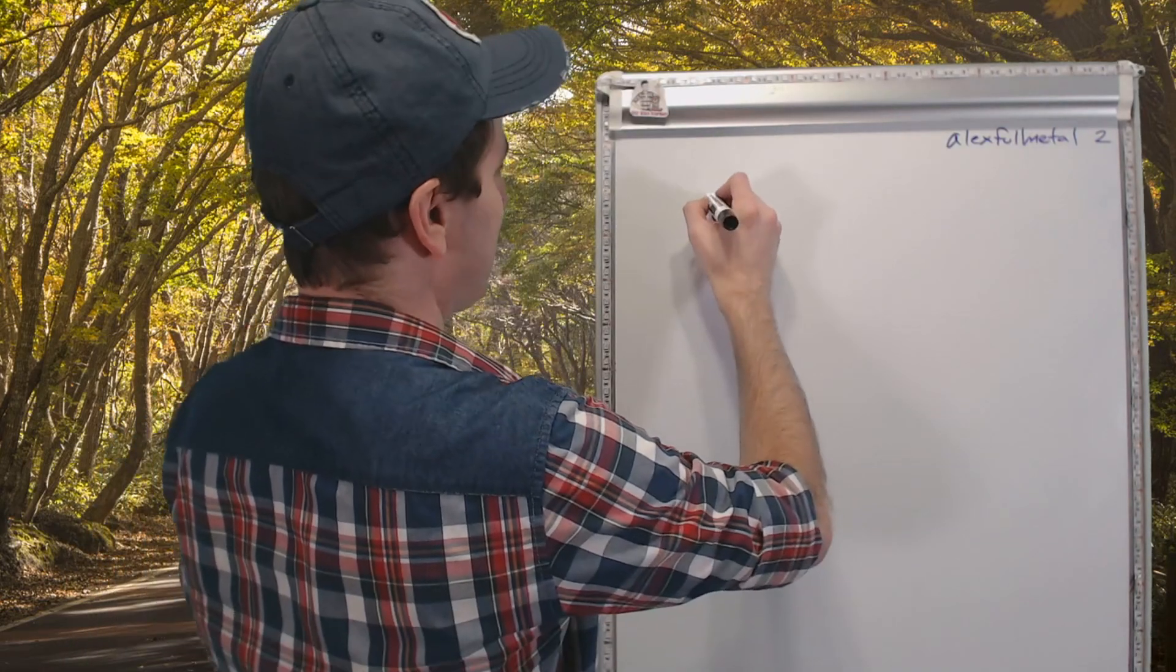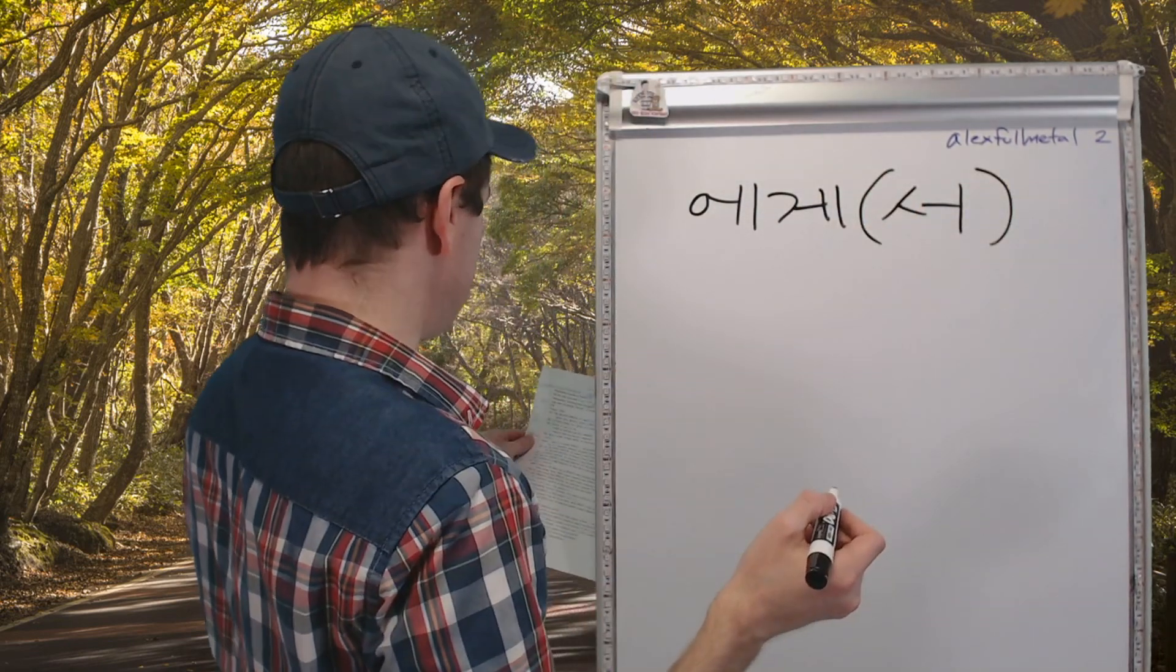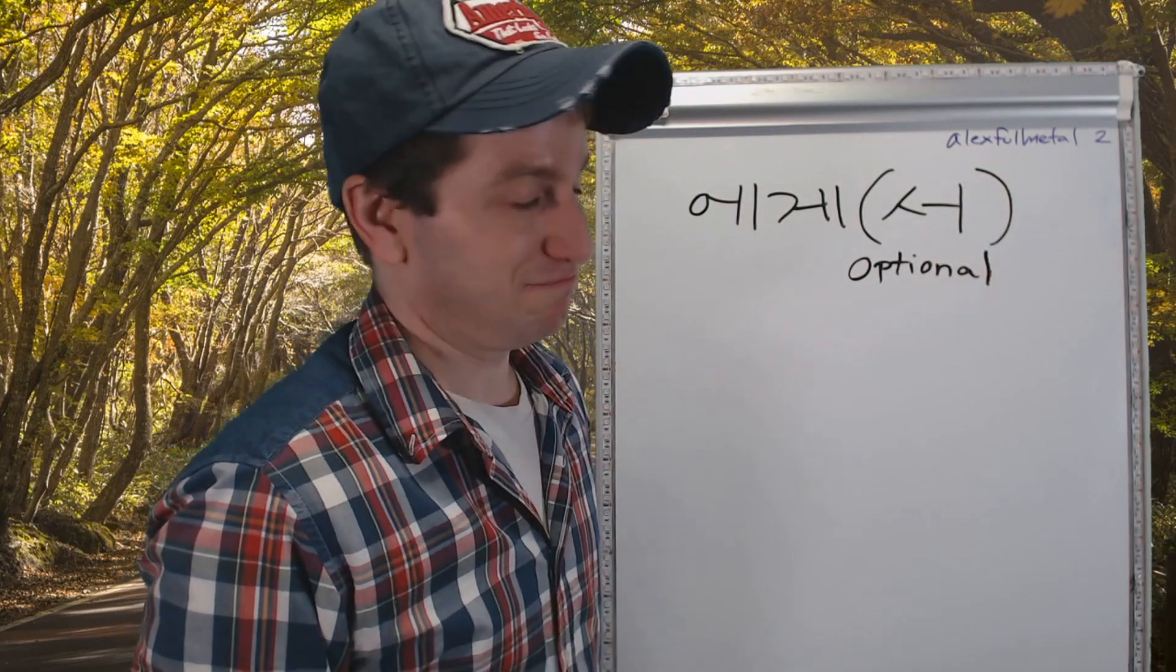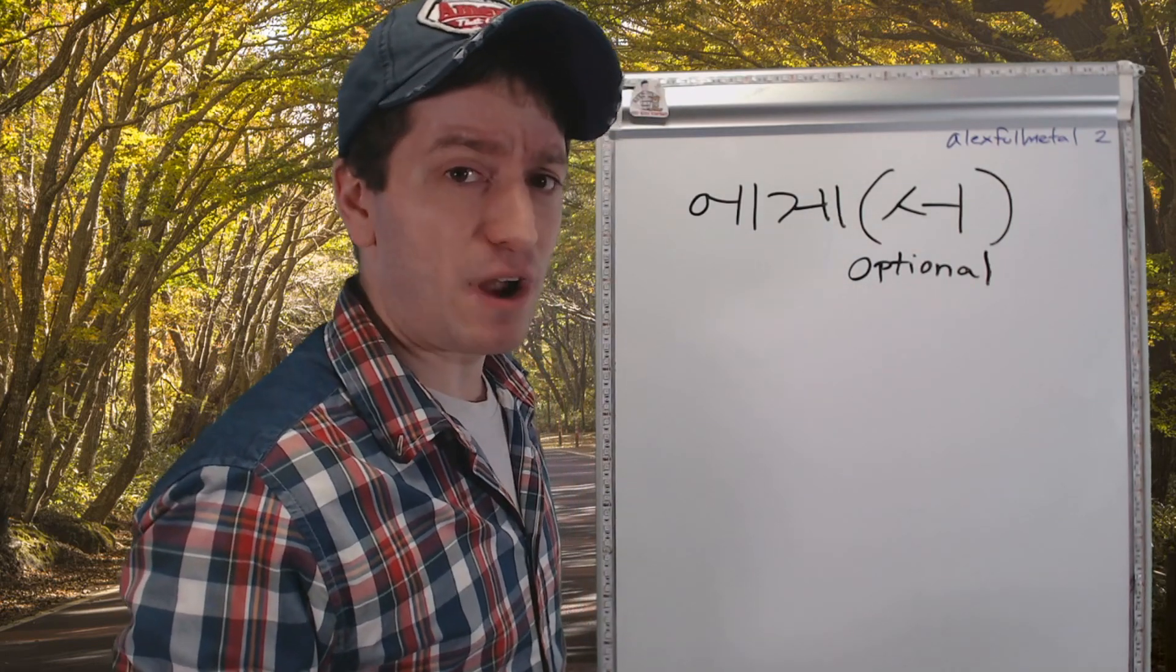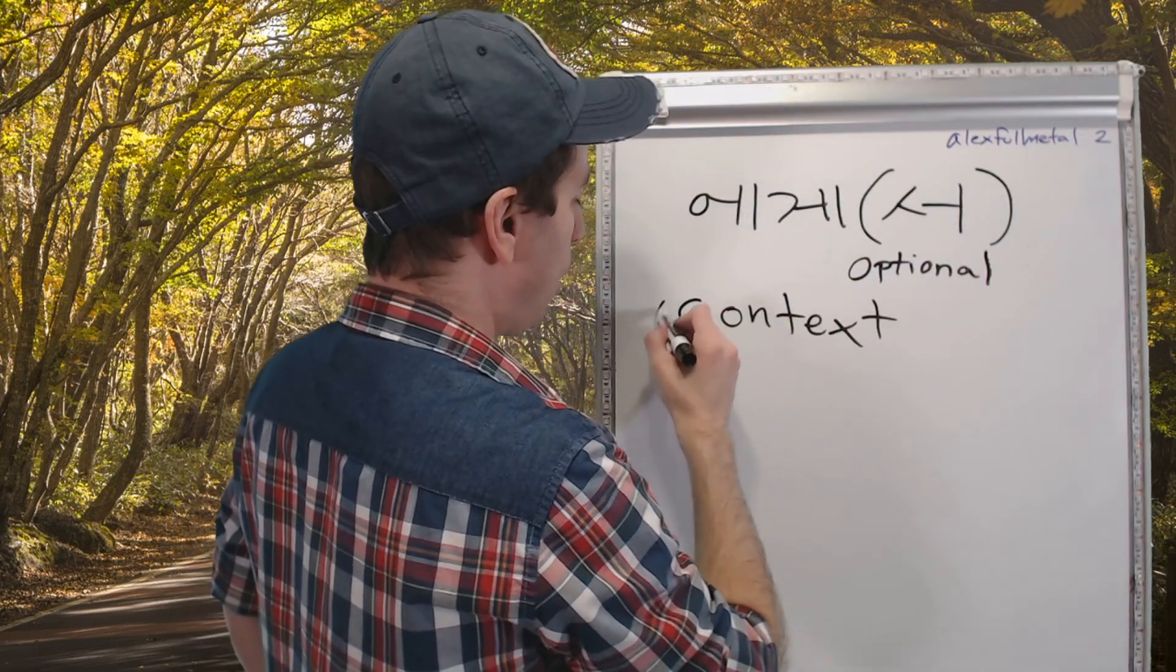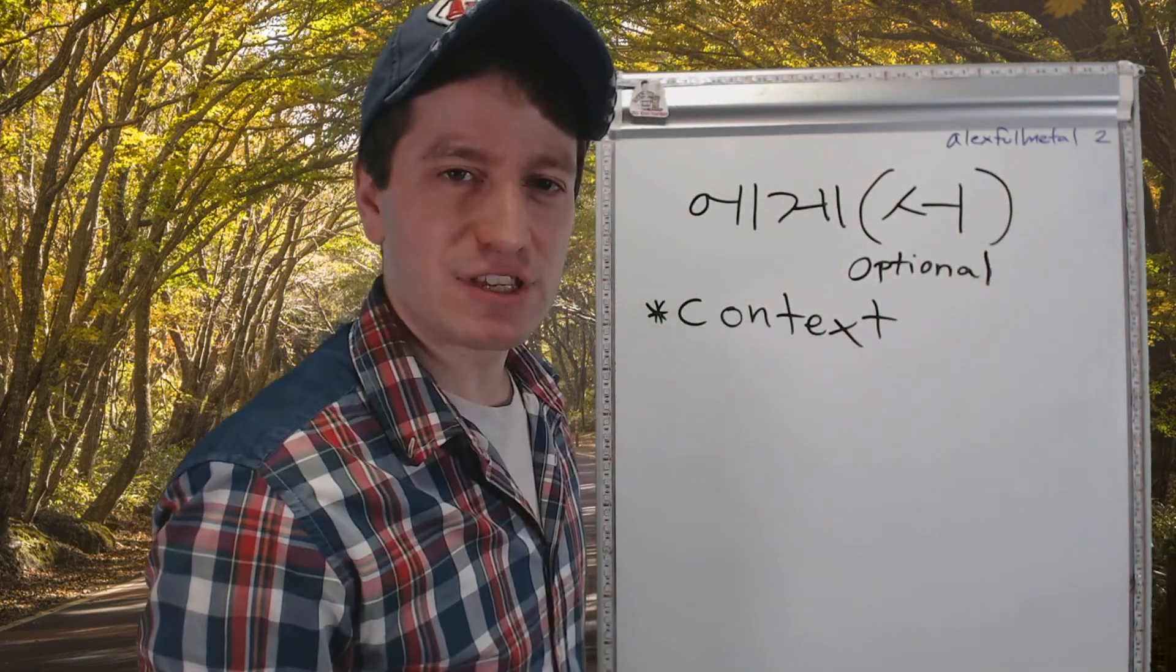The next one we're going to learn how to say is from. And that is 에게서. This 서 is completely optional. It's the exact same meaning. That means that 에게 could mean to or 에게 could mean from. Then how do you know if it means to and how do you know if it means from? You will always know if 에게 means to or from by the context of the sentence.